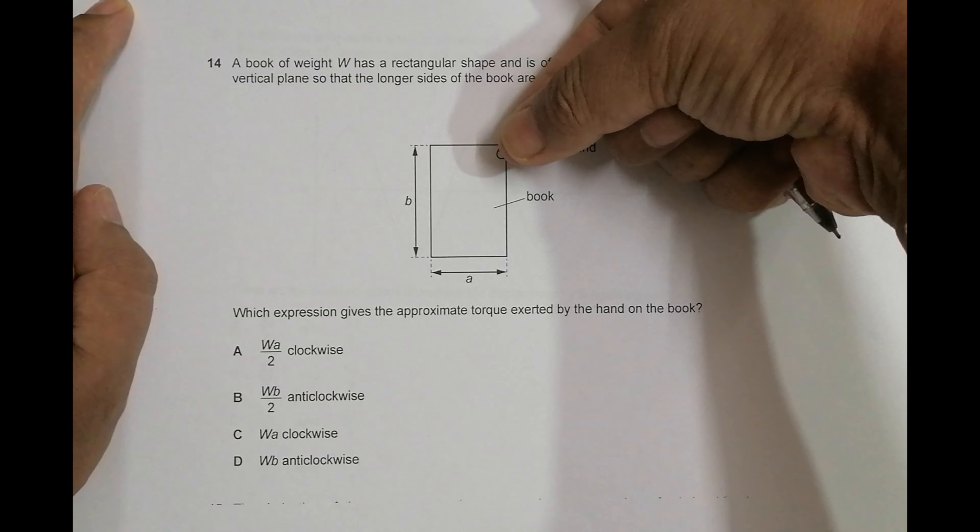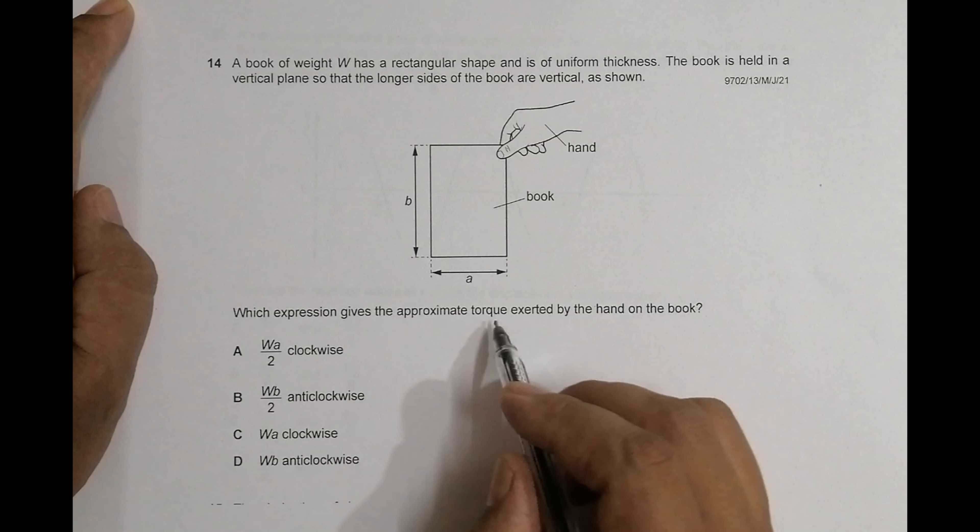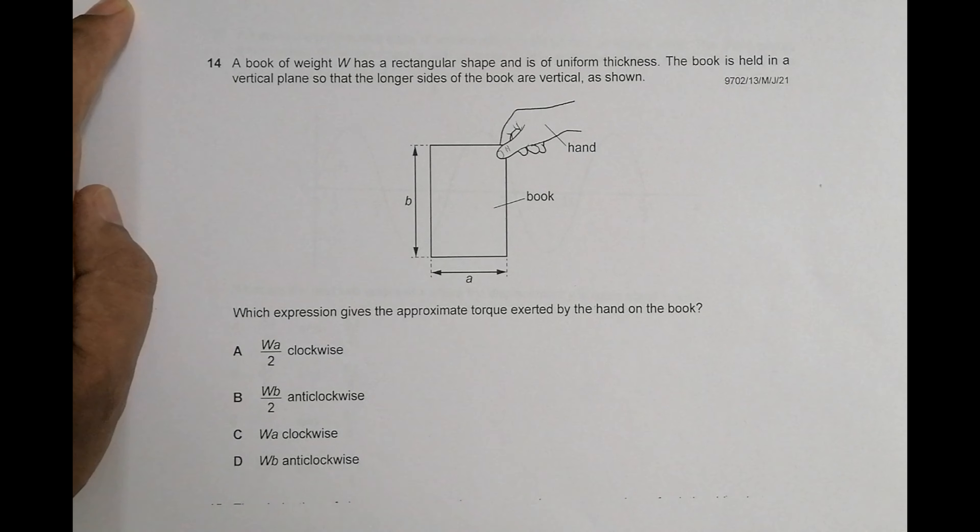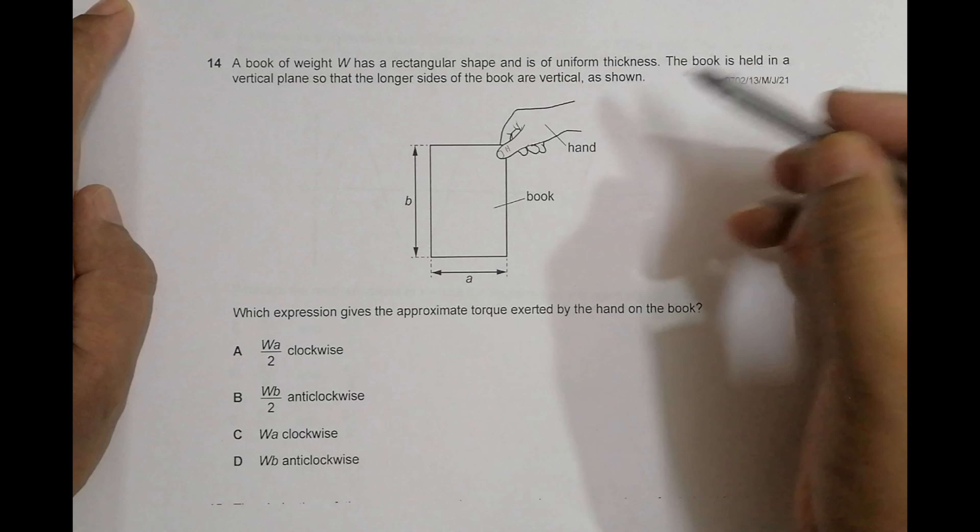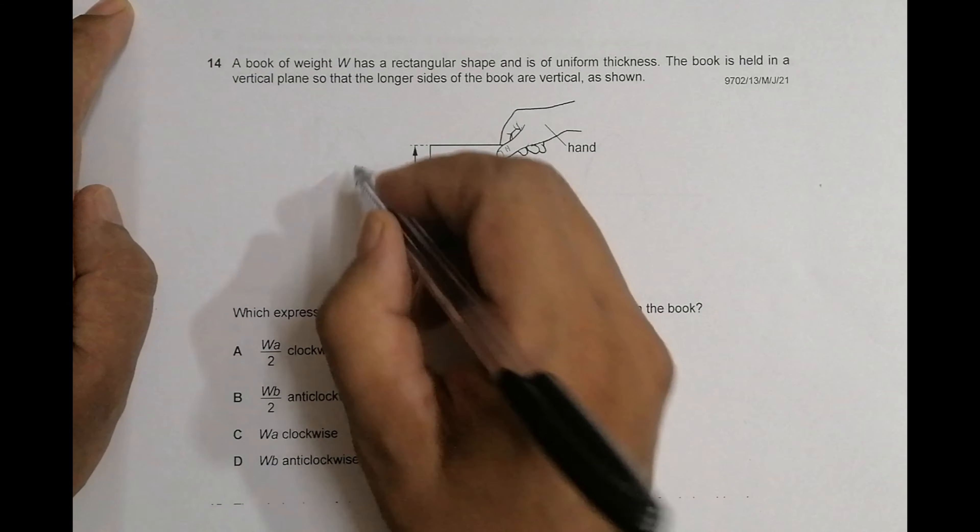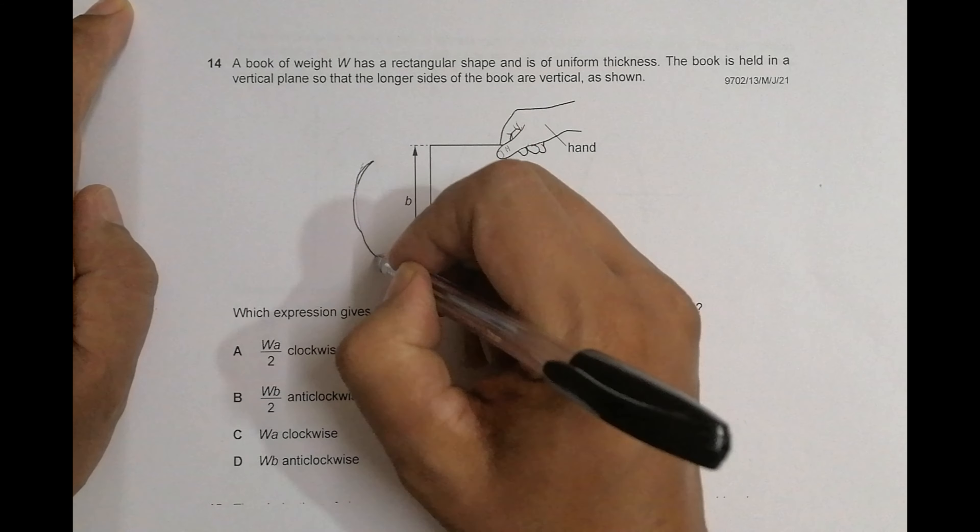We have to find which expression gives the approximate torque exerted by the hand on the book. The work of this hand is to prevent the book from rotating like this. Its work is to prevent the book from rotating like this.